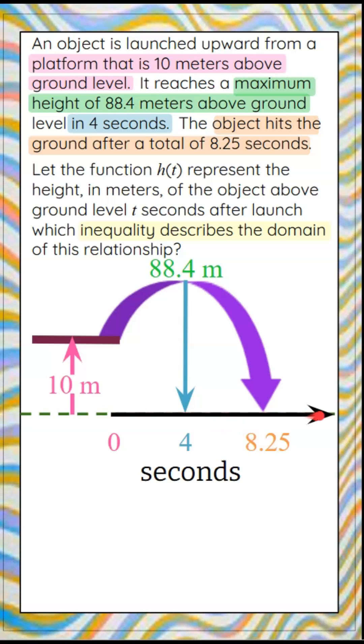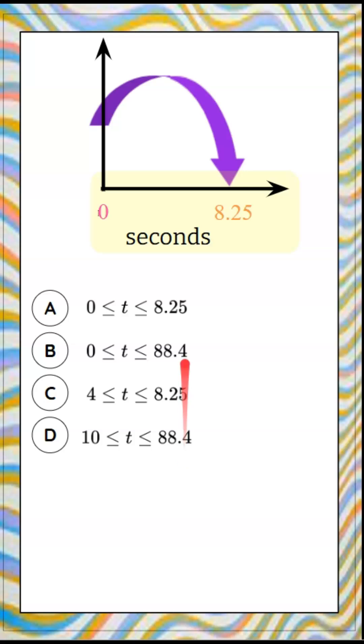Time in seconds represents our x-axis, and our y-axis is represented by meters, from 0 meters to 88.4 meters. We're asked to describe the domain, so let's clear our workspace, because our domain is looking at just the time in seconds, our x-axis.